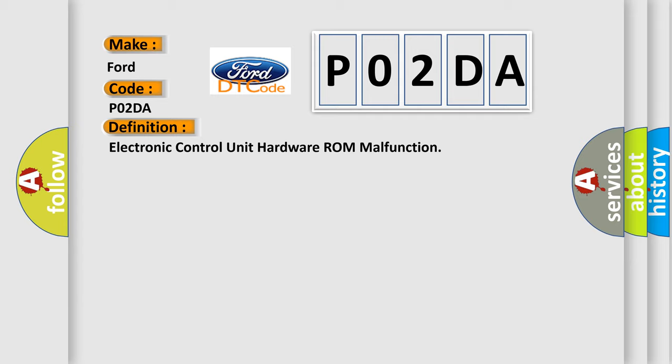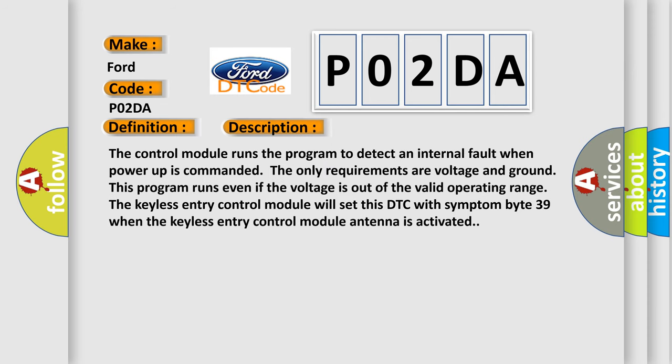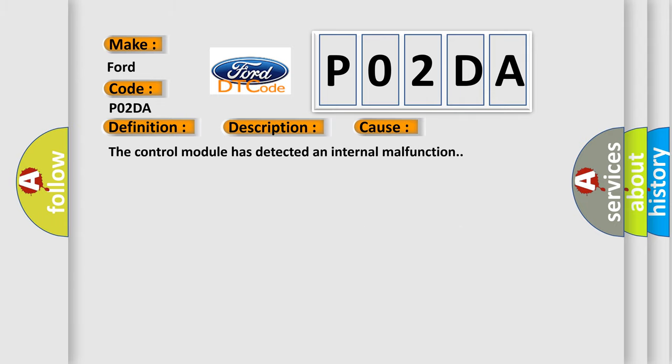And now this is a short description of this DTC code. The control module runs the program to detect an internal fault when power-up is commanded. The only requirements are voltage and ground. This program runs even if the voltage is out of the valid operating range. The keyless entry control module will set this DTC with symptom byte 39 when the keyless entry control module antenna is activated. This diagnostic error occurs most often in these cases: the control module has detected an internal malfunction.